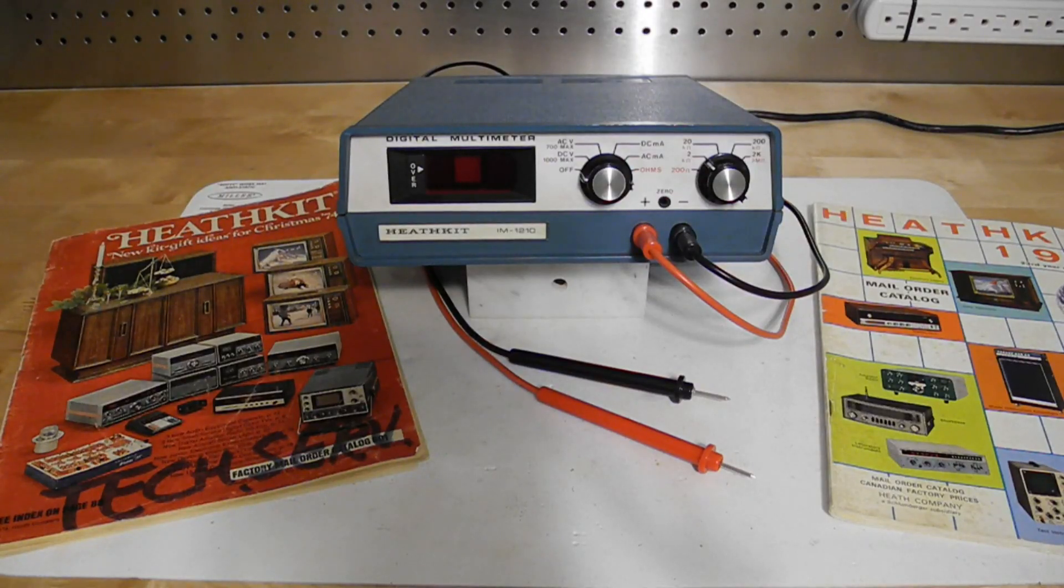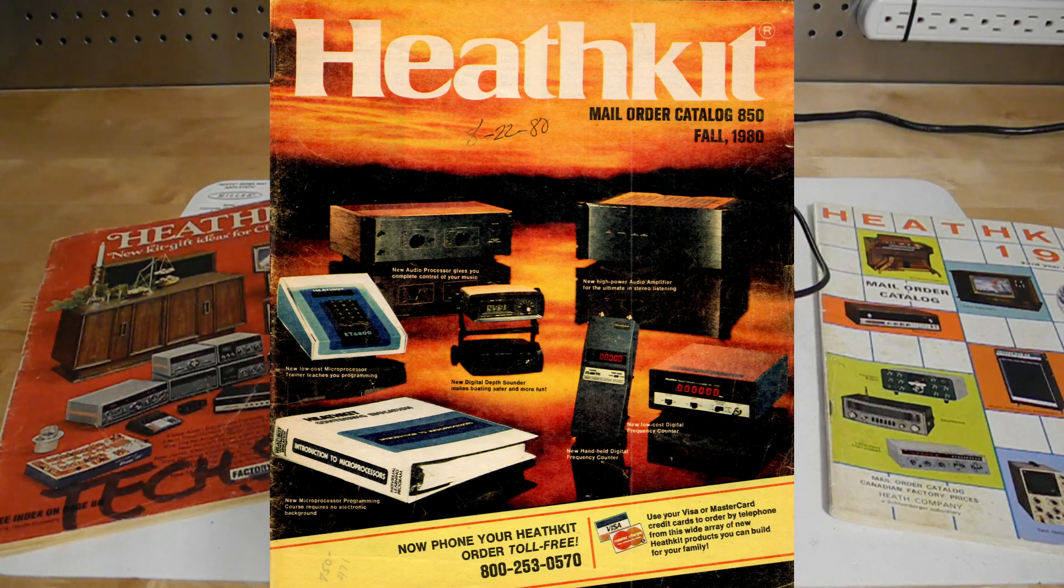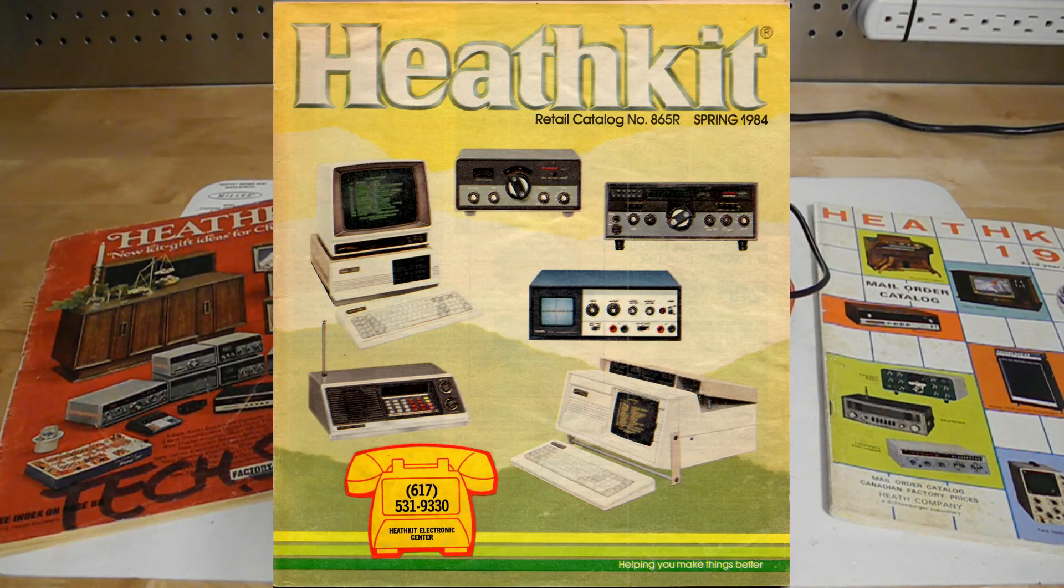Heathkit was a manufacturer of electronics in kit form. Their product line included amateur radio, test equipment, and various consumer products. By building a piece of electronics, you could save money and gain the satisfaction of having assembled it yourself.